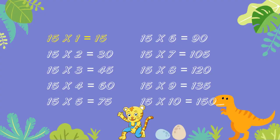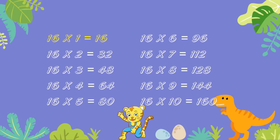15 ones are 15. 15 twos are 30. 15 threes are 45. 15 fours are 60. 15 fives are 75. 15 sixes are 90. 15 sevens are 105. 15 eights are 120. 15 nines are 135. 15 tens are 150.